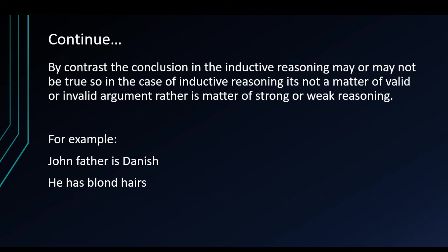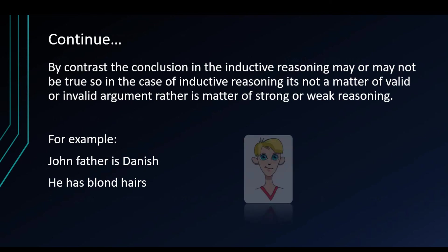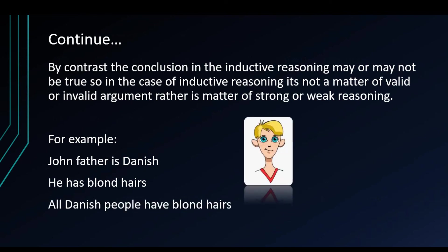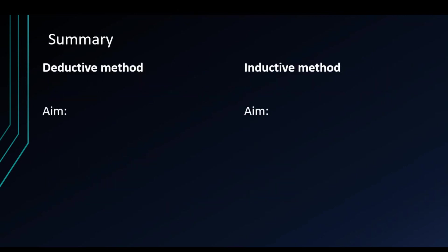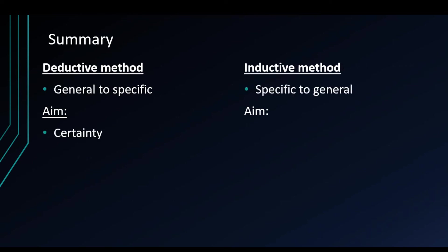For example: 'John's father is Danish. He has blonde hair. Therefore, all Danish people have blonde hair.' This is a rather weak argument — we would need more data to support the conclusion. To summarize, always remember the characteristics of deductive and inductive arguments. The process of scientific exploration is one of the reiteration of these methods; the aim is to become better at both. This will engage both parts of your brain associated with these processes.